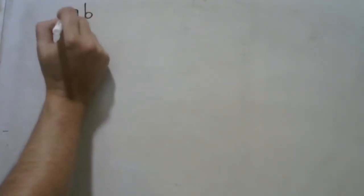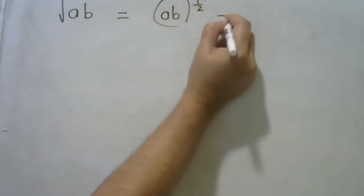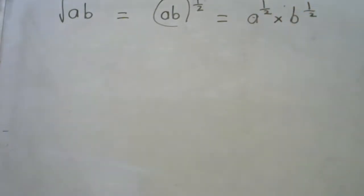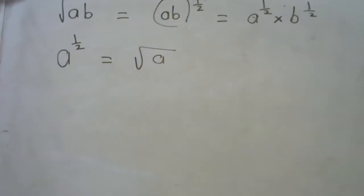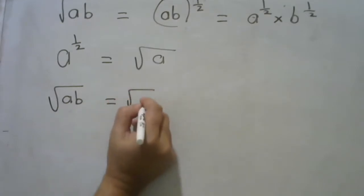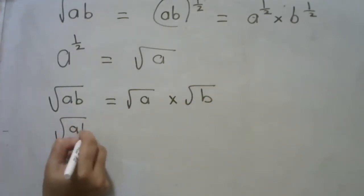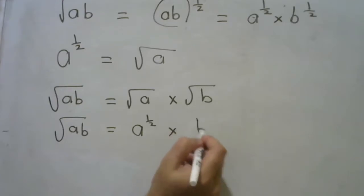In this video I'm just going to look at two simple ideas. The square root of ab is the same as ab to the half power, which is the same as a to the half times b to the half. Since a to the half is the same as the square root of a, root ab equals root a multiplied by root b.